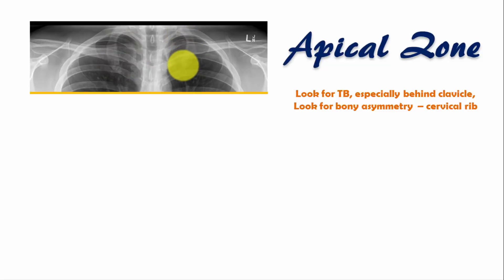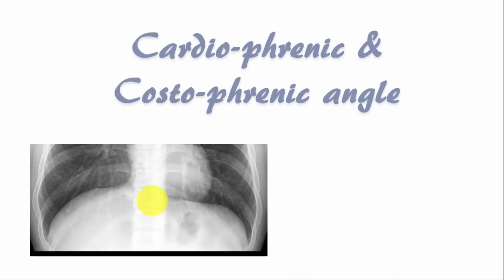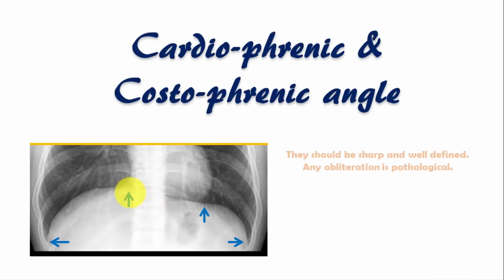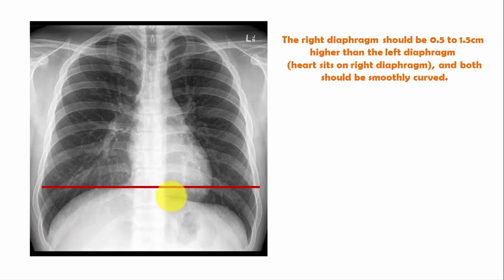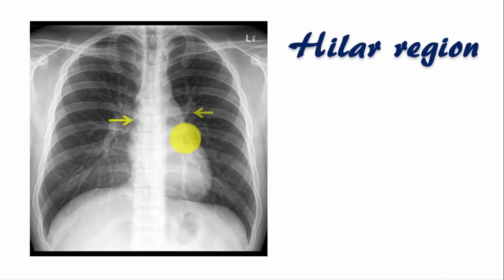Look for the cardiophrenic and costophrenic angles — they should be sharp and well-defined; any obliteration is pathological. Note that the right dome of the diaphragm is 0.5 to 1.5 centimeters higher than the left dome, because the heart sits on the left side and the liver is on the right. Also note the smoothness of both domes of the diaphragm, as they should be smoothly curved.